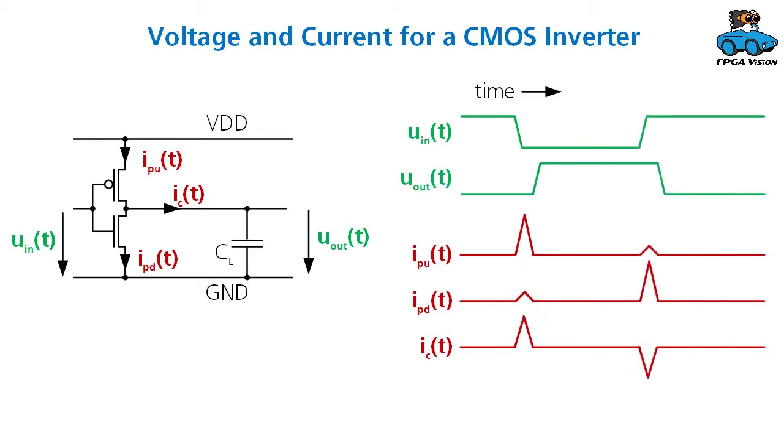Later on, we assume that the input voltage goes back from 0 to 1. The output voltage will go from 1 to 0, and we have the reverse behavior of the currents. Now the capacity loses its load through the pull-down transistor, and we have a negative current for the charging current of the capacity. But we also have again a cross current where both pull-up and pull-down transistors are in the switching process.